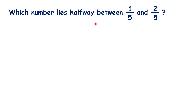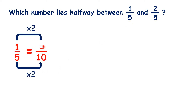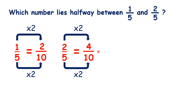Which number lies halfway between 1 fifth and 2 fifths? Well, the number halfway between 1 and 2 is 1 and a half, but we can't write 1 and a half over 2, so instead we need to use equivalent fractions to help us. 1 fifth is the same as 2 tenths, and 2 fifths is the same as 4 tenths, so we want the number halfway between 2 tenths and 4 tenths — that's 3 tenths.